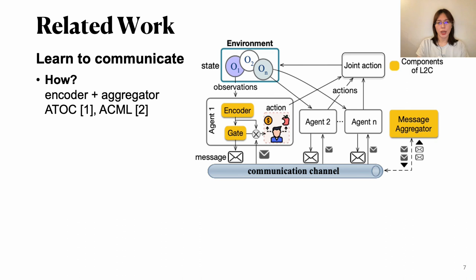Then what's the efforts on communication-aware cooperation? State-of-the-art mostly focuses on learning to communicate efficiently, which includes two aspects. First is how to communicate. Agents need to learn how to encode observations into messages which can be shared. And secondly, given multi-messages can be received, agents also need to learn how to aggregate them.